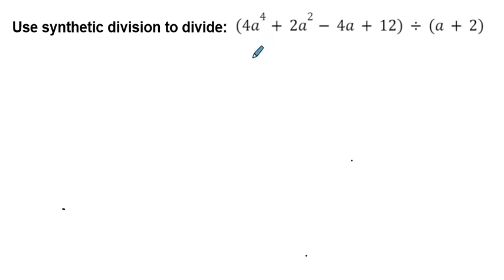You notice on those last two problems we had x to the third, x squared, x, and then a zero term. On this problem we're going up a little higher, starting with a term raised to the fourth power, which is fine. We can go as high as we want. It just means my answer is going to start with a to the third.